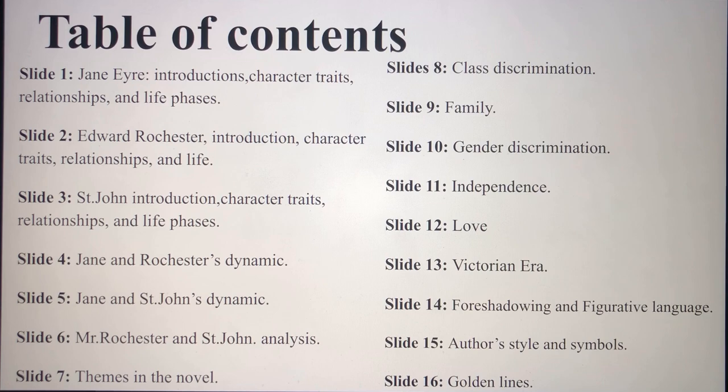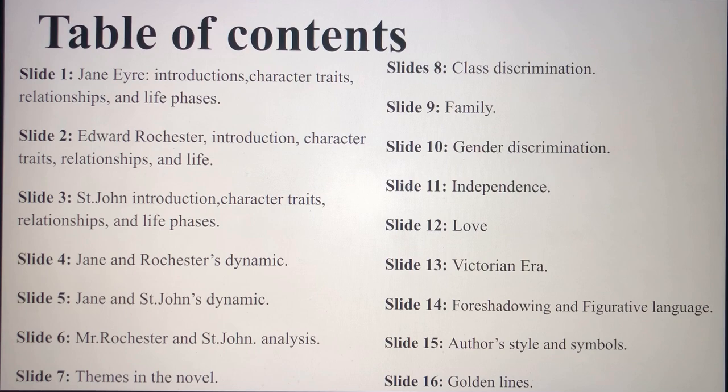Then we have Edward Rochester, Mr. Rochester — we'll be introducing him and giving a summary of everything that happened throughout his life, the relationships he has, and the life he led. We also have St. John — his character traits, relationships, and life phases. Then Jane and Rochester's dynamic, what they bring out in each other, and Jane and St. John's dynamic, and the analysis between Rochester and St. John.